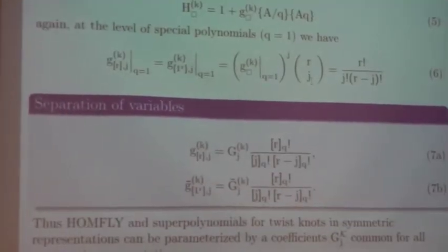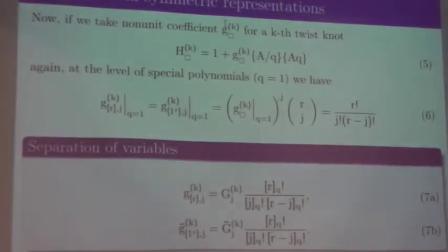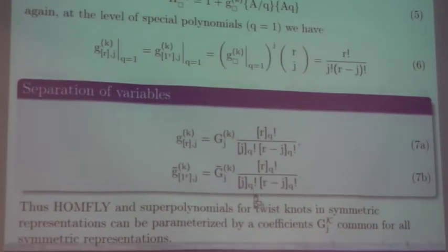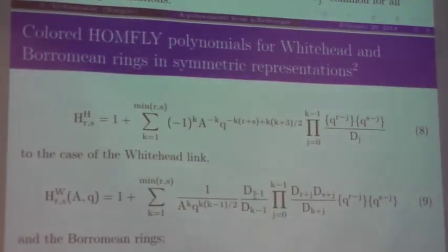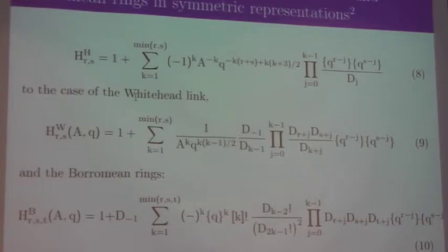This is the general formula for all twist knots. Maybe I will say in the end two words about that. And here are the formulas which we did - this is the Whitehead link. If we draw the Whitehead link, it has the following form.